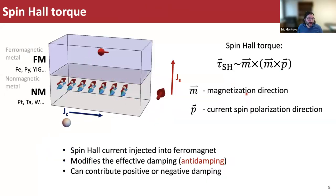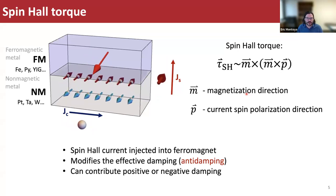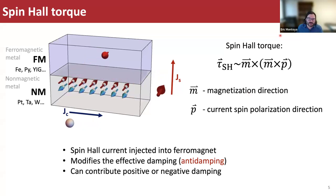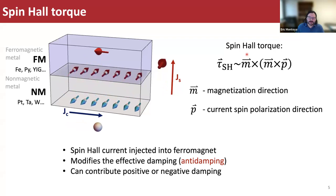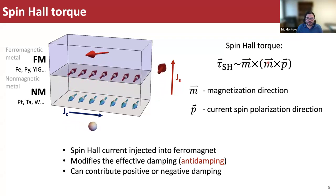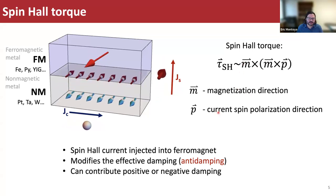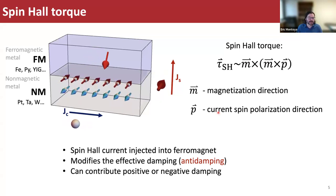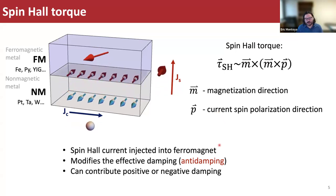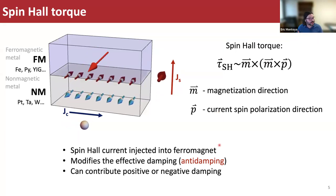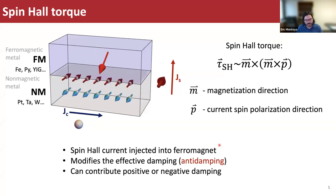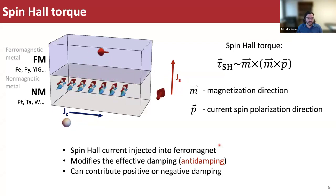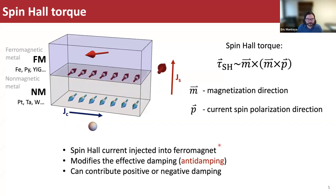If you put a ferromagnetic material — say iron or permalloy if it's a metal, or yttrium iron garnet as an insulator — the spin current can exert a spin hall torque. Working out this double cross product, where M is the magnetization direction and P is the spin current polarization direction, this serves to align the magnetization to the polarization of the spin current. The spin hall current injected into a ferromagnet modifies the effective damping, which I call anti-damping — it can contribute positive or negative damping.